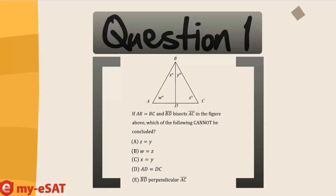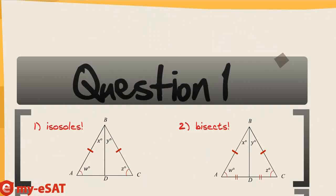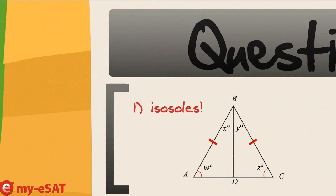If AB equals BC and line BD bisects line AC in the figure above, which of the following cannot be concluded? The problem is initially telling us two things about triangle ABC. First, that AB equals BC — that means we have an isosceles triangle. Think back to our law of proportions: what does that tell us about the two opposite angles? They have to equal each other. That's what the law of proportions tells us: when two sides are equal in length, the opposite angles are equal in measure.